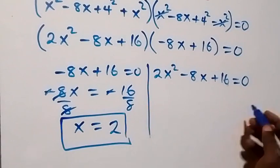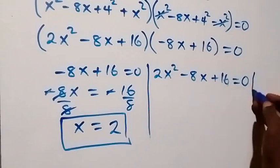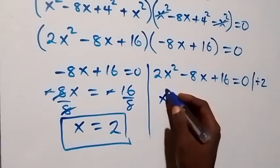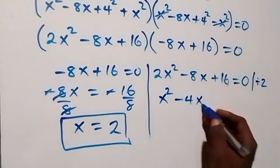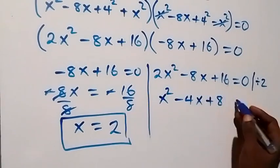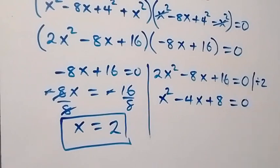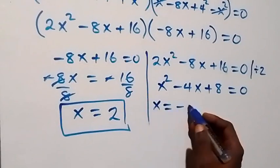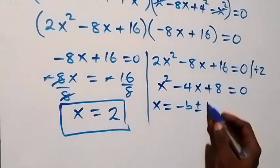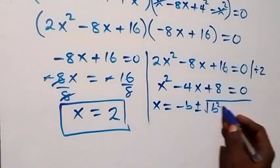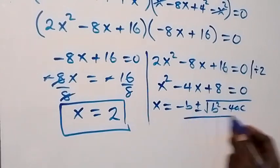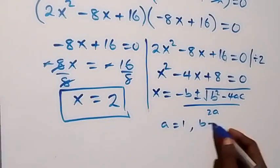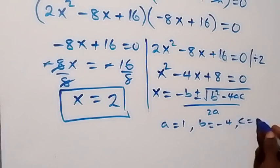Then on this side we reduce by dividing by 2, such that this becomes x squared minus 4x plus 8 equals to 0. We solve this using the quadratic formula: x equals negative b plus or minus square root of b squared minus 4ac, over 2a, where a equals 1, b equals minus 4, and c equals 8.